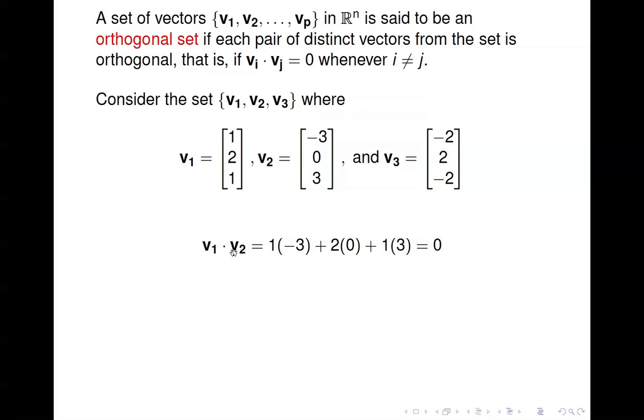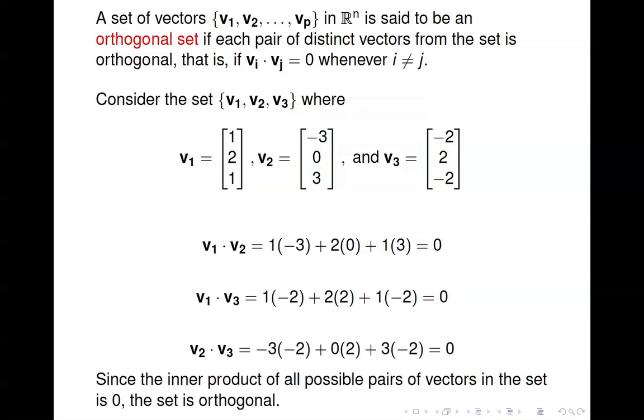Start off v1 with v2, so I get 1 times -3 plus 2 times 0 plus 1 times 3, and that's zero. Then I'll do inner product of v1 with v3, and then v2 with v3, and you see that all of those are zero. So that means that the set itself is orthogonal because we took all possible pairs and did inner products, and each one of those was zero.